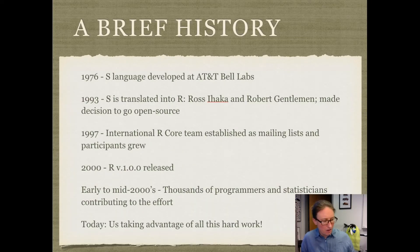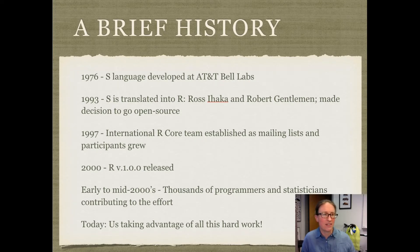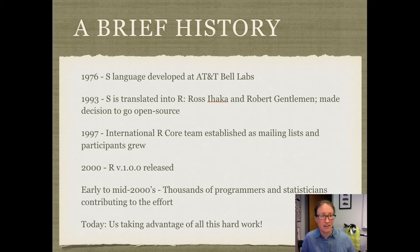R actually started out as a fork of another software programming language called the S language, which was developed by a research lab run by AT&T, back in the 1970s. R got translated from S in 1993, and at that point, the programmers who made that decision also made a really important decision to make R open source, and I'll talk more about what that means in a minute.